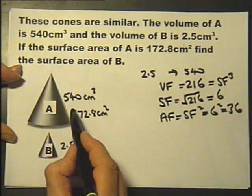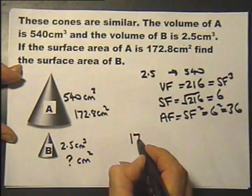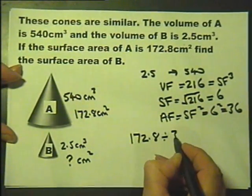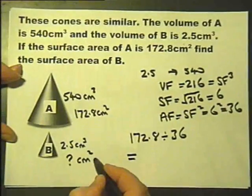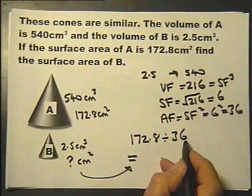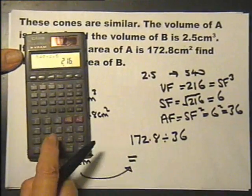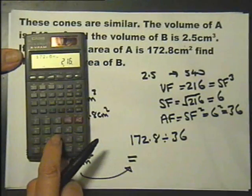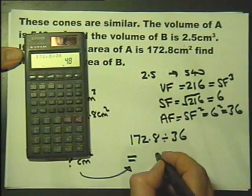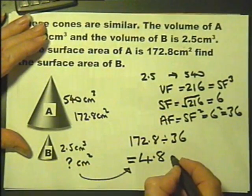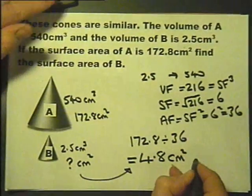Or conversely, if I take this surface area of the larger cone divided by 36, I will have the surface area of the smaller cone as required. So here we go, 172.8 divided by 36. So that is the surface area for the smaller cone.